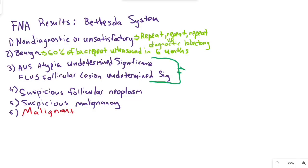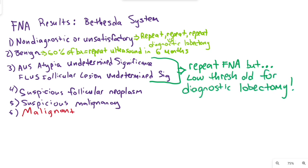For atypia of undetermined significance and FLUS, I would repeat the FNA for these, but have low threshold for diagnostic thyroid lobectomy.